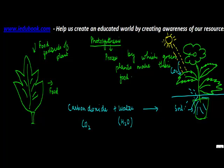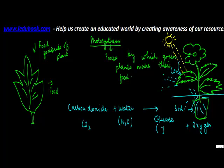the leaves produce glucose plus oxygen. The oxygen produced is released back into the fresh air. The glucose is the food which is prepared by the plant. So they intake carbon dioxide and water, and produce glucose plus oxygen. Glucose is basically the food of the plant.